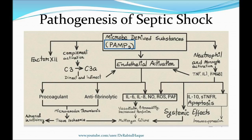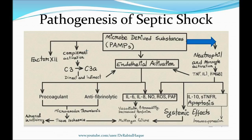When PAMPS bind with toll-like receptors on our immune cells, that activates various downstream signaling pathways and initiates inflammation. Besides toll-like receptors, our immune system also contains G-protein coupled receptors that can detect bacterial peptides. When immune cells are activated by PAMPS and other microbe-derived substances, they begin to produce mediators like tumor necrosis factor, interleukin-1, interferon gamma, interleukin-12, interleukin-18, HMGB1, reactive oxygen species, and platelet activating factors.